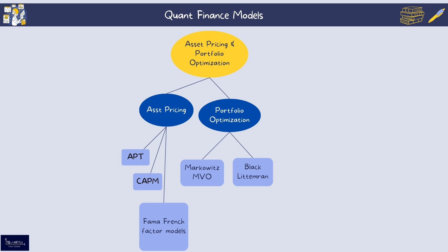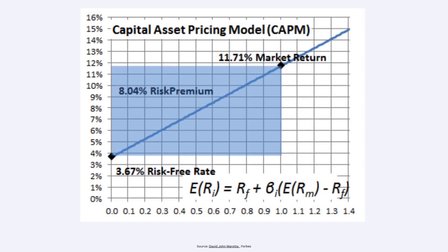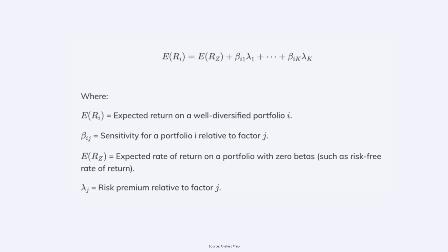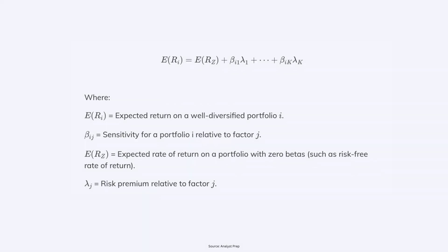I've subdivided the next category into asset pricing and portfolio optimization, both under portfolio theory. Within asset pricing, the most famous is the CAPM — Capital Asset Pricing Model — which estimates the expected return of an asset based on its systematic risk (beta), the risk-free rate, and the expected market return. It assumes investors are compensated only for systematic risk. Arbitrage Pricing Theory (APT) is a multi-factor model that explains asset returns through various macroeconomic factors, allowing more flexibility than CAPM by not relying on a market portfolio.